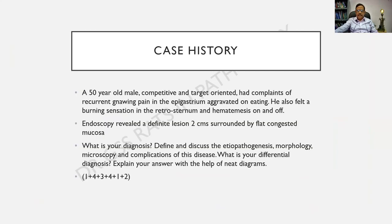I start with the case history. A 50-year-old male, competitive and target-oriented, had complaints of recurrent gnawing pain in the epigastrium, aggravated on eating. He also felt a burning sensation in the retrosternal region and complaints of hematemesis on and off. Endoscopy revealed a definite lesion about 2 centimeters in diameter surrounded by flat congested mucosa. The question will be: what is your diagnosis? Discuss the etiopathogenesis, morphology, microscopy, and complications. Also mention the differential diagnosis and explain your answers with a neat set of diagrams — diagrams shall carry us the additional marks we need.